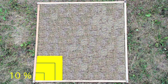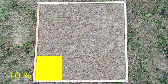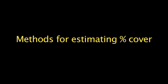A 31.6 centimeter by 31.6 centimeter square gives 10% of the quadrat area. There are many methods for estimating percentage cover. Here are three commonly used methods. They're often used in combination with one another.